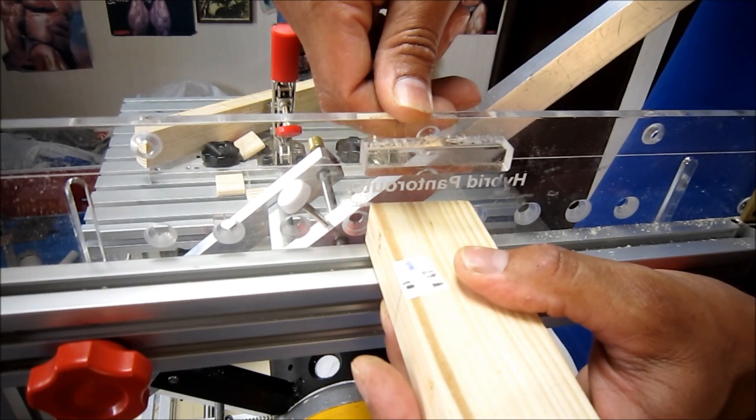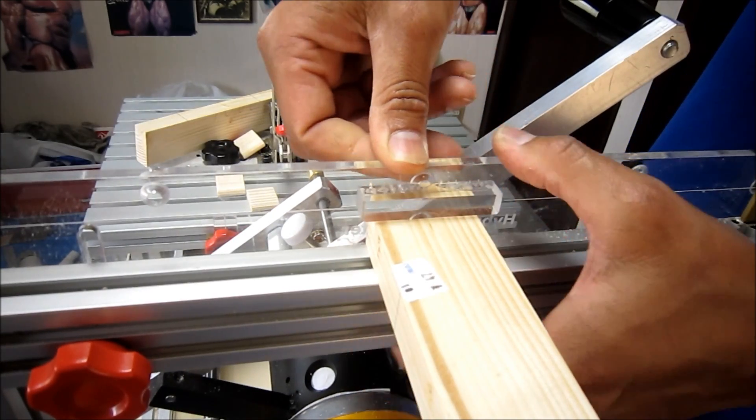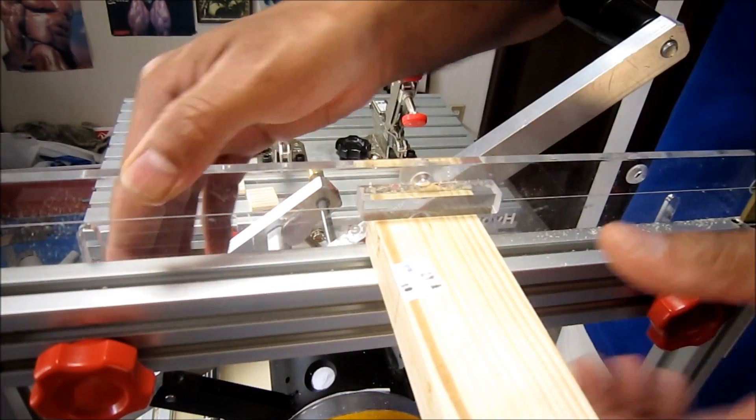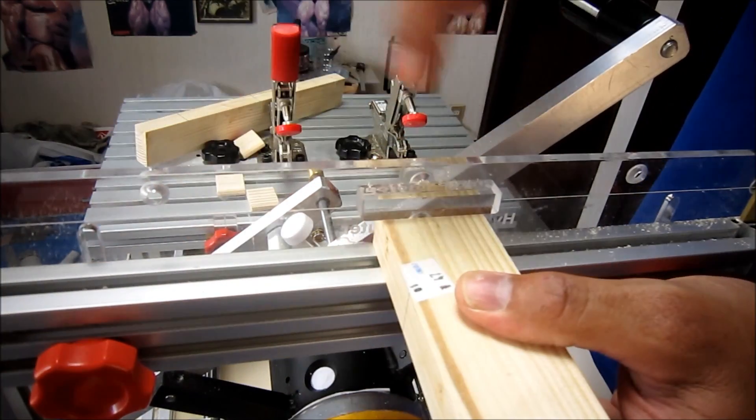I'm going to put my workpiece on the back side of this template holder to make sure my mortise comes in exactly in the center. I'm just going to lock it like that, so now it will come exactly in the center.